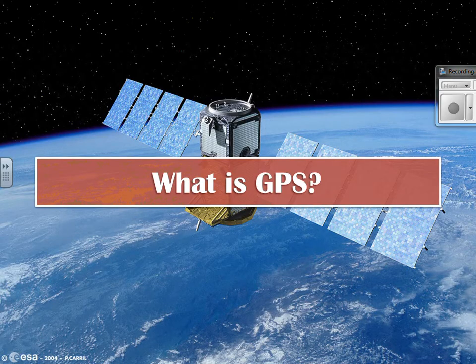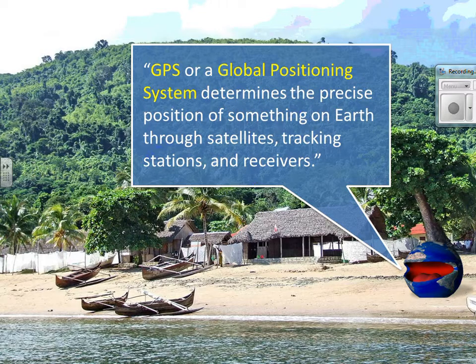Besides GIS, there is GPS — very different. GPS stands for Global Positioning System. Using satellites in space, it's going to be able to tell you where on the Earth you are, or where on the Earth you want to go. You're very familiar with this — many of your parents' cars have GPS systems, or you may have a GPS unit, a watch, or your phone can tell you. It uses satellites to tell where something is.